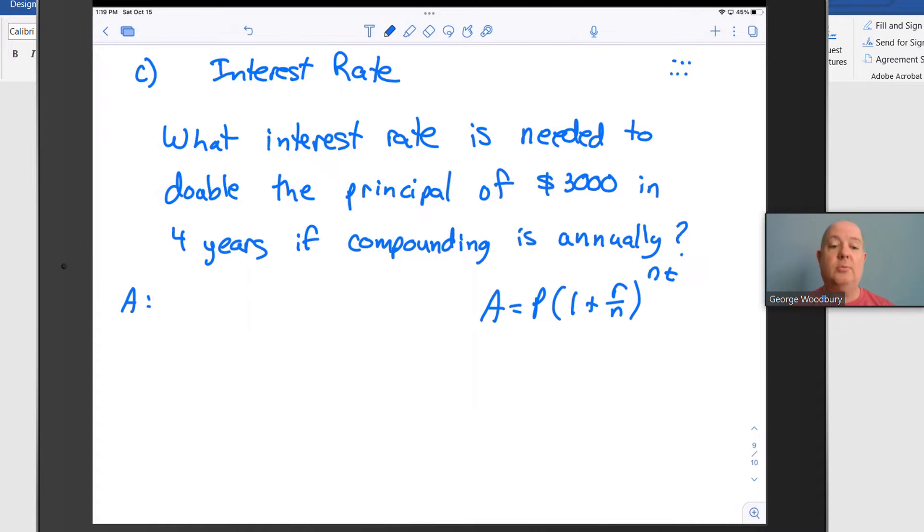I'm going to list the different variables in the formula down the left-hand side: A, the amount at the end; P, the principal; r, the annual interest rate as a decimal; n, the number of times it's compounded per year; and t, the number of years. I'm going to start to read through this problem to pick off the important information and extract that information.